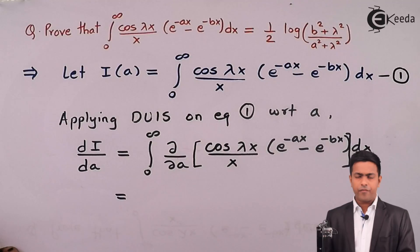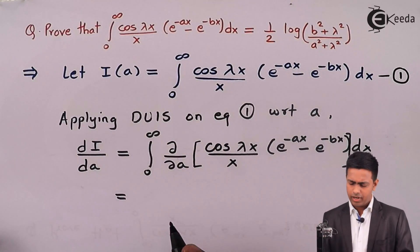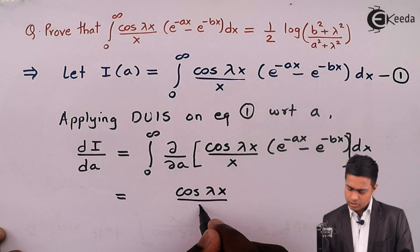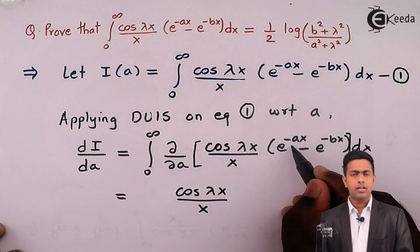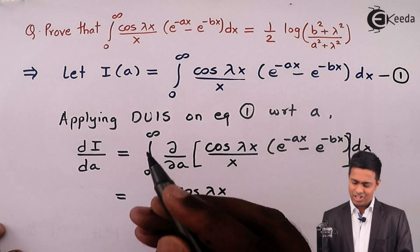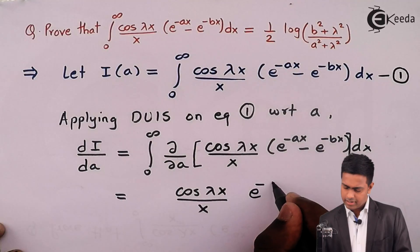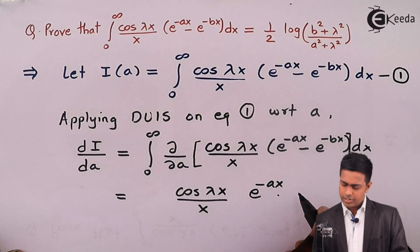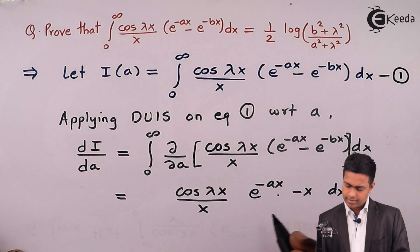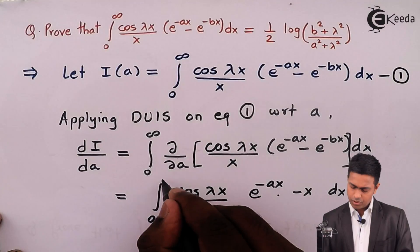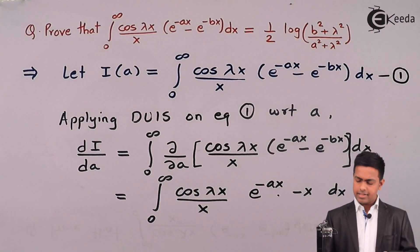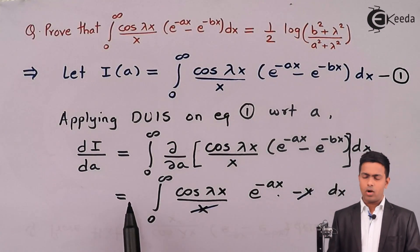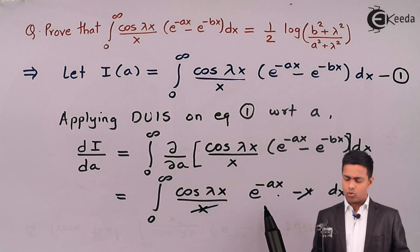By differentiating partially with respect to a, cos(λx)/x is constant. For e^(−ax), the differentiation gives e^(−ax) · (−x). The integral is from 0 to ∞. Here we can cancel x and x, take the negative sign outside, and in the integration we get e^(−ax) · cos(λx).